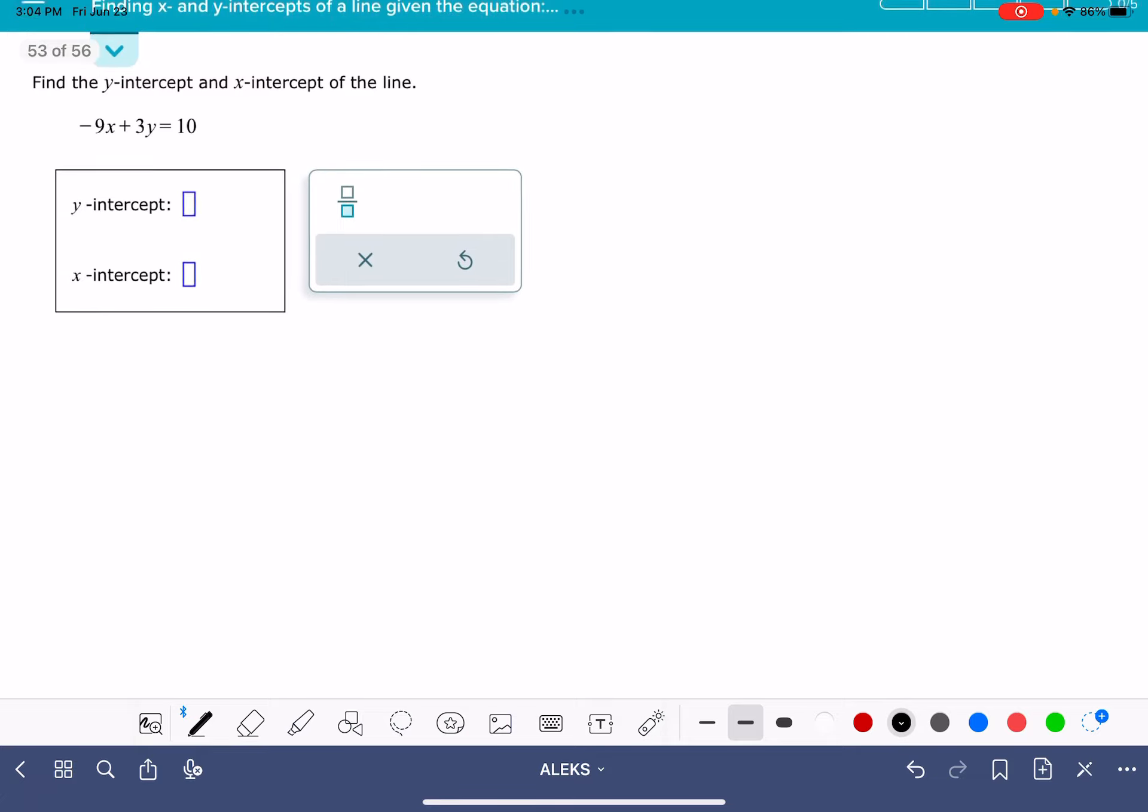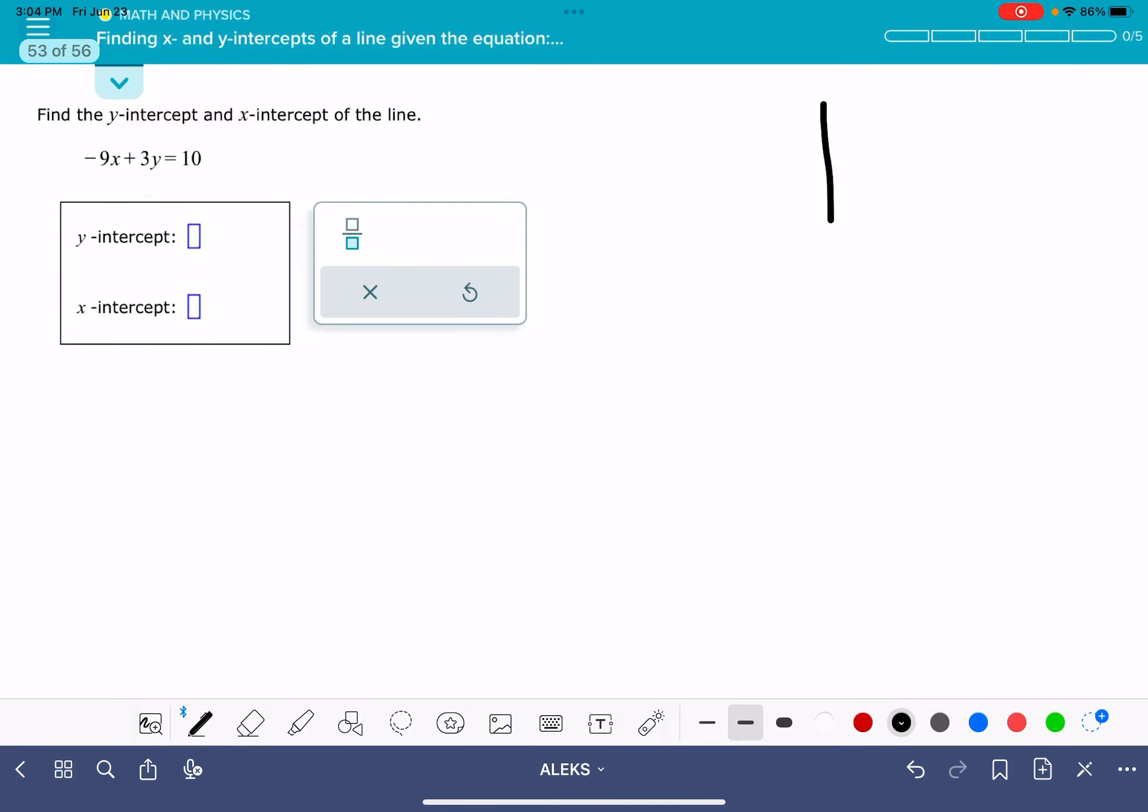I think it might be helpful to sketch a random line. I'm not sketching the line represented by the equation that's given to us, just a random line so we can remind ourselves what the intercepts represent.